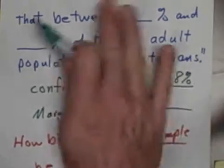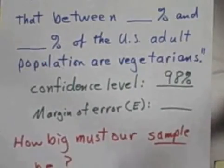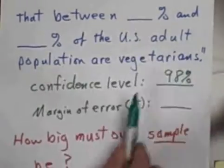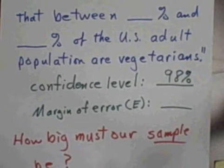In other words, if I go out and did this and collected 100 different samples, then 98 of them would, if I do the math on each one, would give me a confidence interval that really does contain the actual percent of all the U.S. population that are vegetarians.